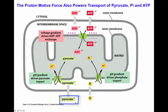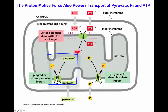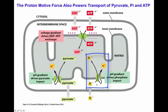For example, pyruvate generated through glycolysis will diffuse across the outer membrane through a porin molecule, as will inorganic phosphate. Pyruvate, being a charged molecule, is impermeable to the inner membrane. So the proton gradient can be used to import pyruvate inside the matrix of the mitochondria via a pyruvate-proton symporter.